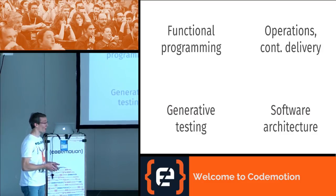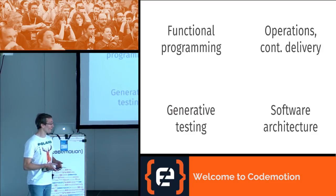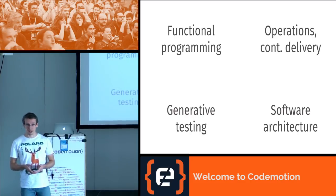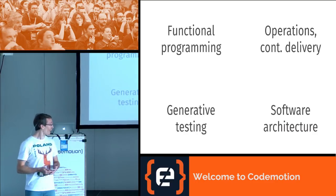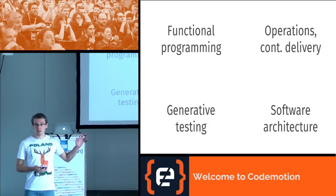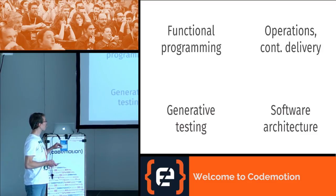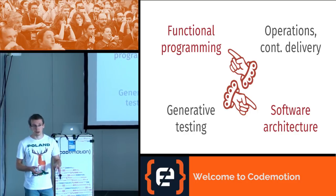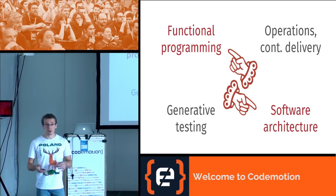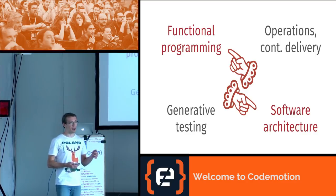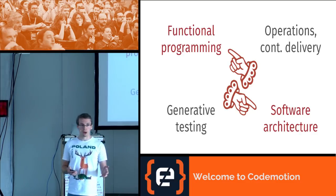There are a couple of topics which I find very interesting: functional programming — I've been doing it in production for a couple of years now and find the concept very productive — operations, continuous delivery, generative testing like QuickCheck property-based testing, and finally software architecture. Right now we're going to focus on the intersection of functional programming and software architecture, because throughout our meetups in Munich we've heard a lot of questions.